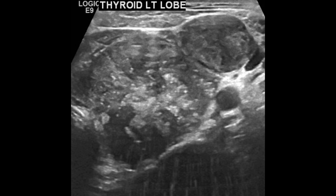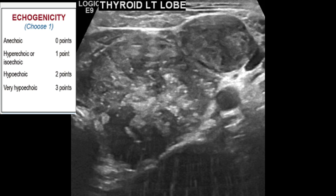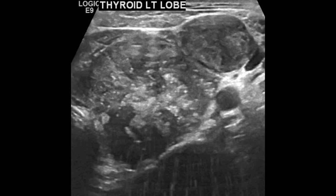For echogenicity, you have to compare the echogenicity of the nodule with the rest of the thyroid. Sometimes when there is no normal tissue left, you may need to compare it with the other side or even the strap muscle. Here, when we compare the nodule, it turns out to be hypoechoic, so we will give it two points for echogenicity.